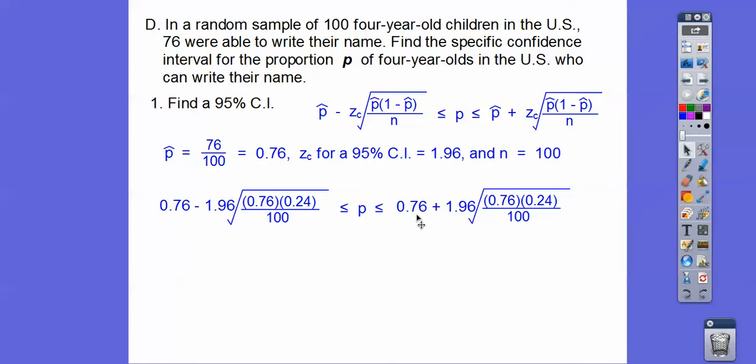Let's do this: 0.76 in the calculator, times 0.24. Make sure you hit equal. So I have 0.1824. Now I'm going to divide it by 100, and I have 0.001824.